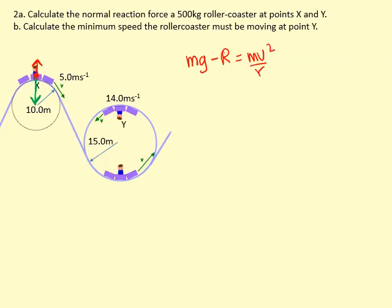So the result will go towards the center and it's equal to Mv squared over R. To get R, we rearrange. So you will get Mg minus Mv squared over R. If you do the calculation, you will get 3655 Newtons.